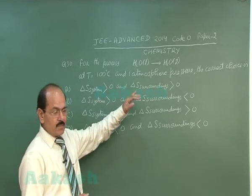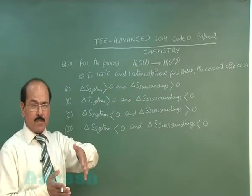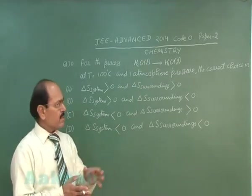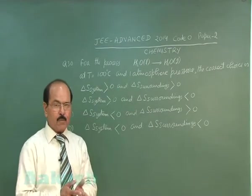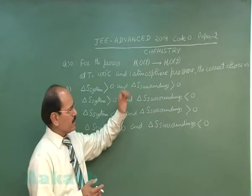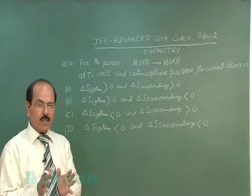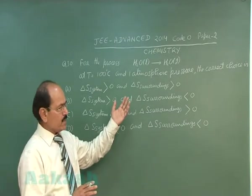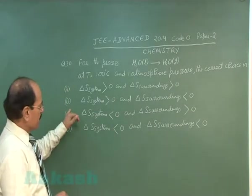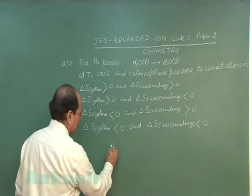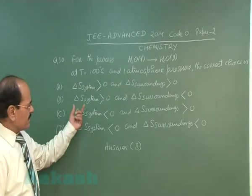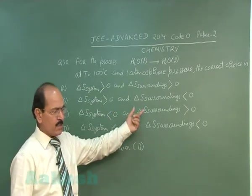At equilibrium, delta G is 0 and the delta H of the forward reaction is positive, so the system is gaining heat and the entropy change of the system is positive. The surroundings are losing an equal amount of heat, so the entropy change of the surroundings is negative. Out of the given four options, option B is correct: delta S system is positive and delta S surrounding is negative.